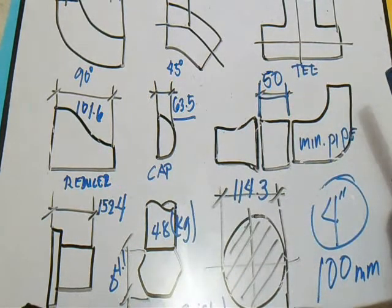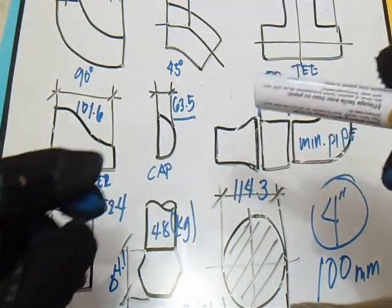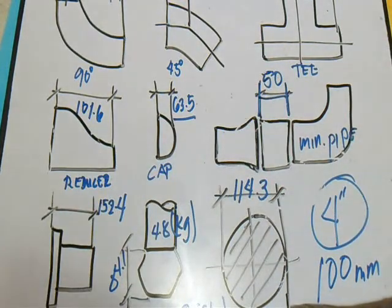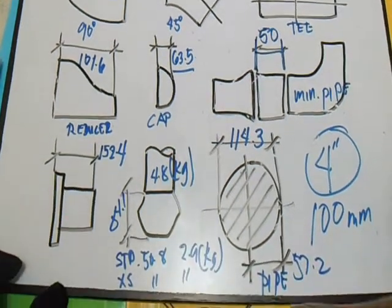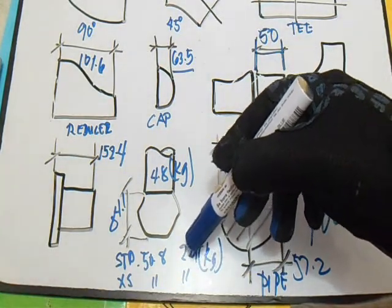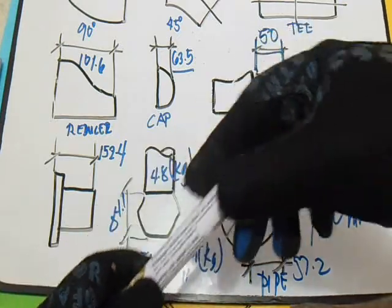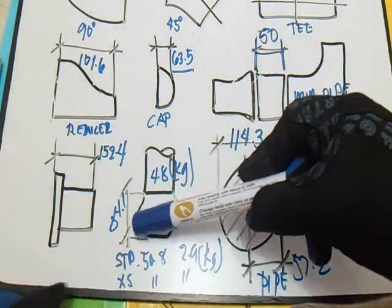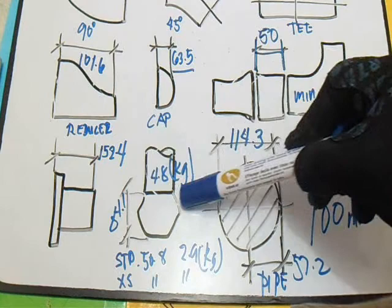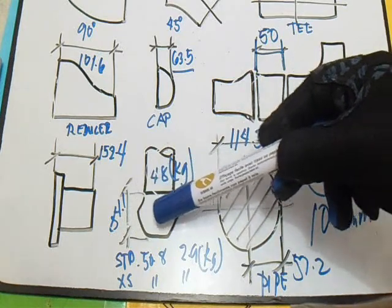And this is our weld-o-let. For the weld-o-let we have different thickness - standard, XS, and schedule 160. For the standard, our takeoff is 50.8 and the weight is 2.9 kilograms. For XS, the same - 50.8 and 2.9 kilograms. But for schedule 160, the takeoff is 84.1 and the weight is 4.8 kilograms.